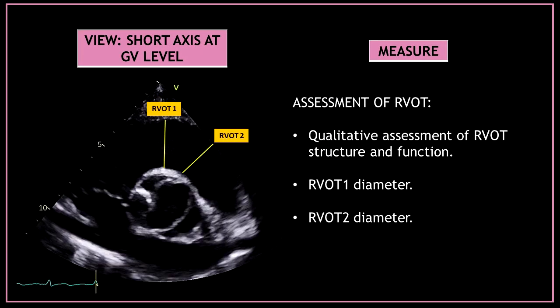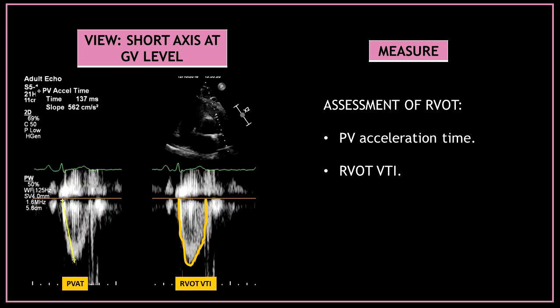Now let's assess the right ventricular outflow tract. At this level you can visually assess the RVOT structure and function and also measure the RVOT 1 and RVOT 2 diameters. Using pulse wave Doppler at the right ventricular outflow tract, you can obtain the pulmonary velocity acceleration time and the right ventricular outflow tract VTI.